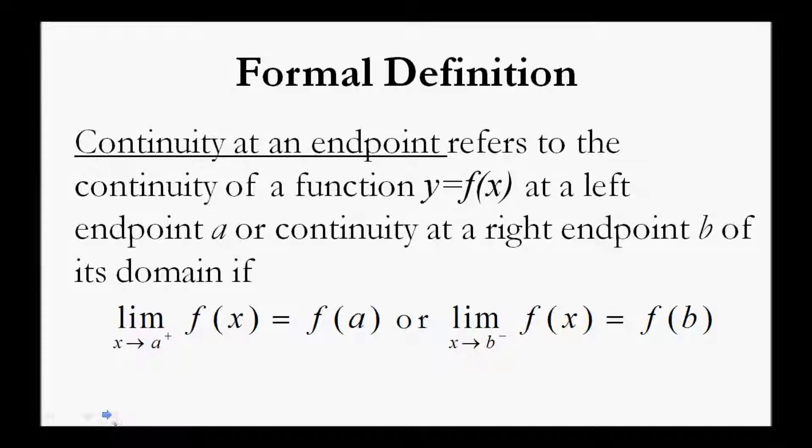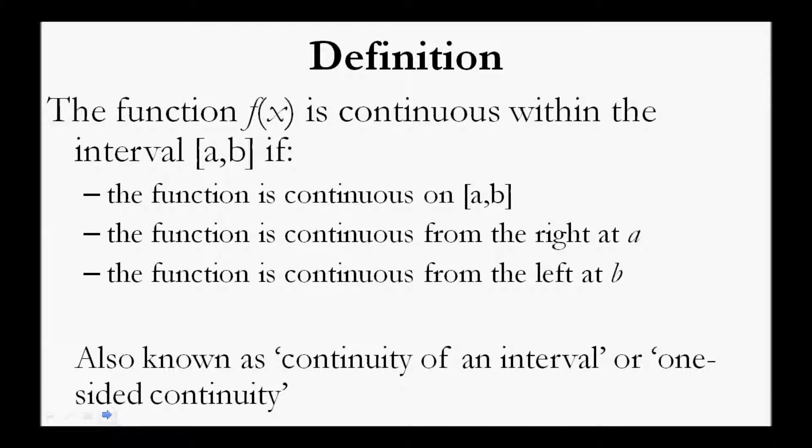To clarify this, the function f of x is continuous within the closed interval [a, b] if the function is continuous on this interval from a to b, the function is continuous from the right at a, and the function is continuous from the left at b. This is also known as continuity on an interval, or one-sided continuity.